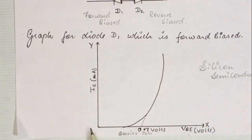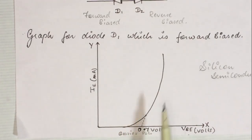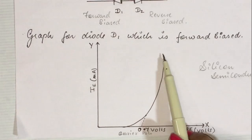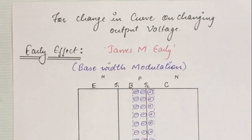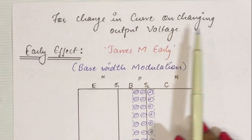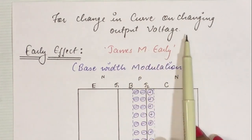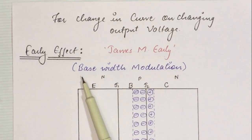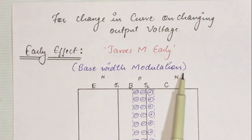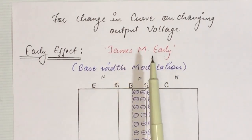To obtain the input characteristic curve, we keep the output voltage constant, and for different values of output voltages we get many similar curves. To study the effect on the characteristic curve when we increase or decrease the output voltage, we can understand this through the Early effect. The Early effect is also known as base width modulation and was given by James M. Early.